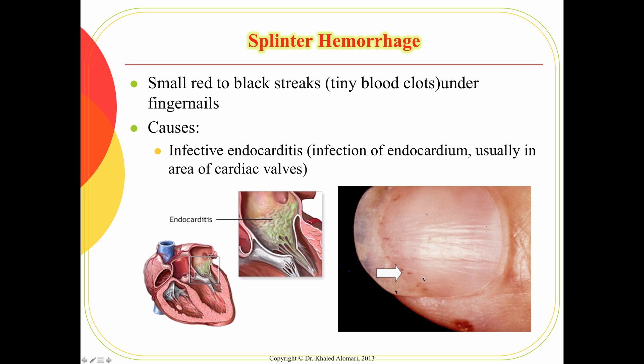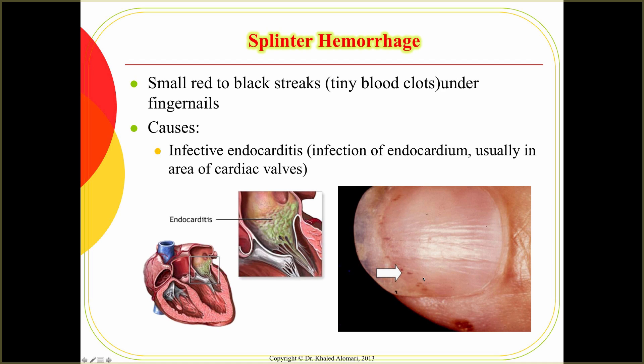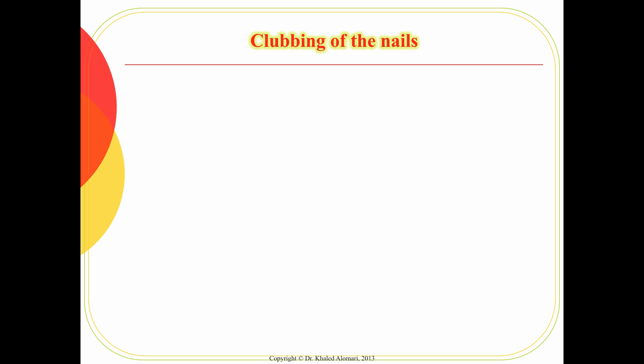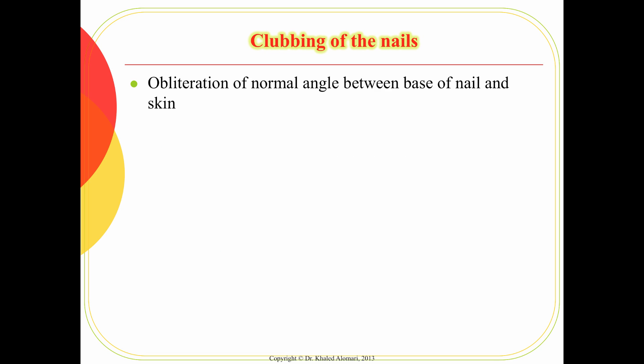Another finding you may see, especially in patients with endocarditis, is splinter hemorrhages. As you can see in this picture, these are correlated with endocarditis. You may also see it in different patients, indicating a recent infection.